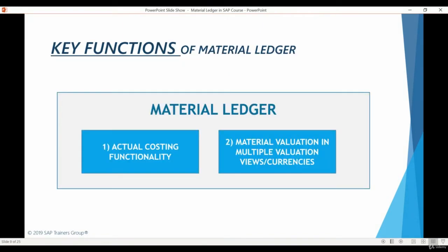Why are these price differences posted to Material Ledger? The system uses these price differences to calculate actual costs for the materials. Material Ledger postings are used to perform actual costing in the system — this actual costing is the first main function of Material Ledger. Material Ledger and Actual Costing are not the same thing, but Material Ledger makes Actual Costing possible. In S/4HANA, it is mandatory to activate Material Ledger, but it is not necessary to activate Actual Costing. In the next chapter, we will see that different configuration screens exist for Material Ledger and Actual Costing specific settings.